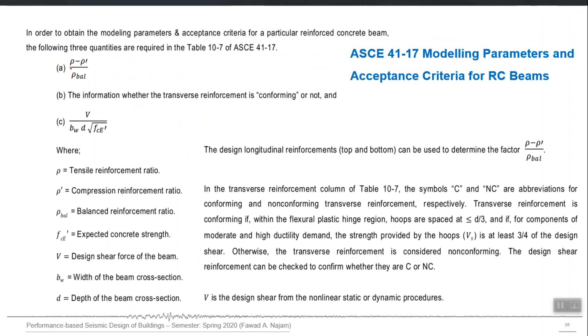Let us quickly check that. First is this parameter: ρ minus ρ prime over ρ balance. ρ is the longitudinal steel positive direction, ρ prime is longitudinal steel negative direction, top steel, and ρ balance is longitudinal steel corresponding to balanced failure of concrete and steel. These three can be calculated easily; actually ρ and ρ prime are already fixed, design is already performed. ρ balance can be worked out easily using similar triangle principle.